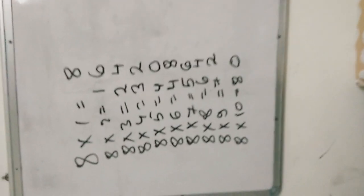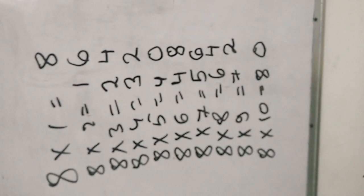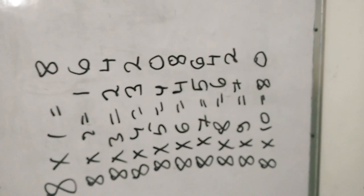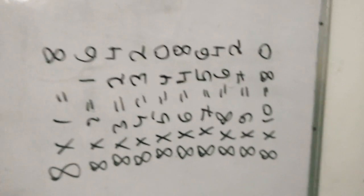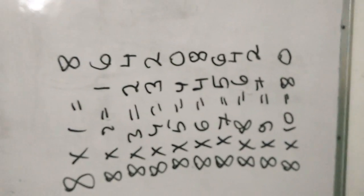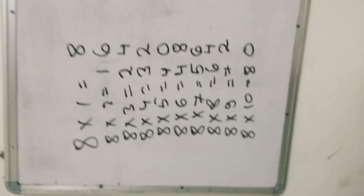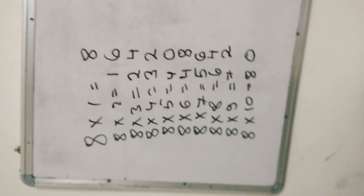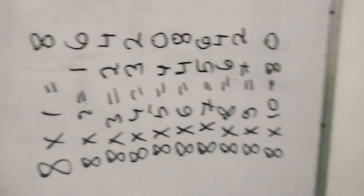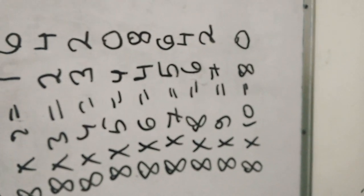Let's read it: eight ones are eight, eight twos are sixteen, eight threes are twenty-four, eight fours are thirty-two, eight fives are forty, eight sevens are forty-eight, eight sevens are fifty-six, eight eights are sixty-four, eight nines are seventy-two, and eight tens are eighty.